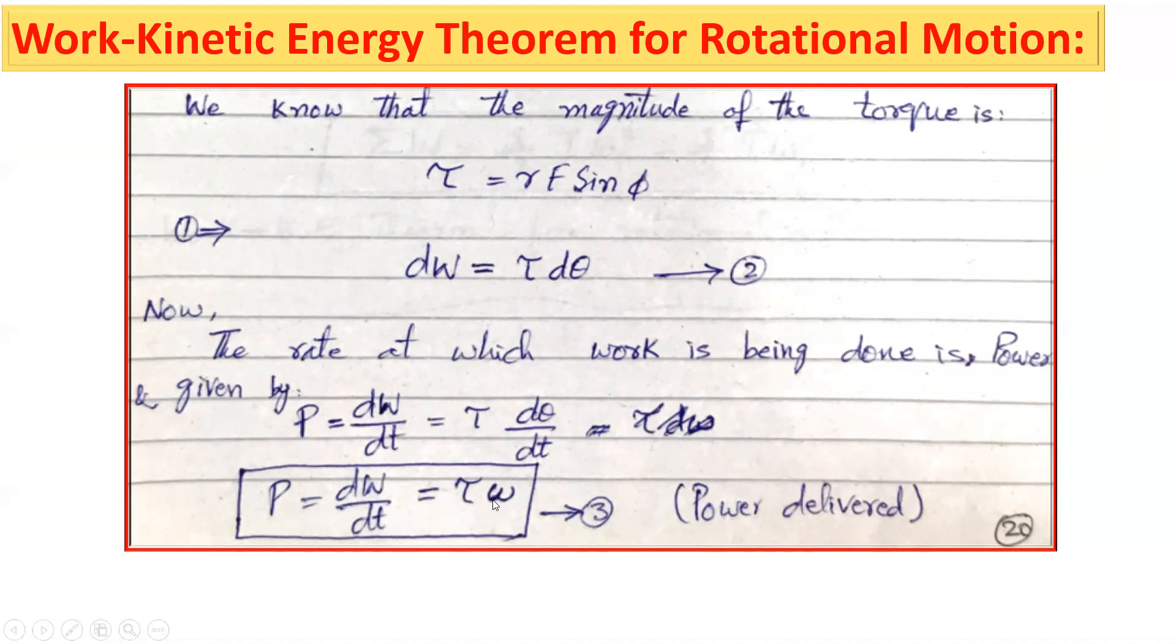Which is equal to tau into omega, since d theta over dt equals omega. This is the power delivered to the object to rotate.